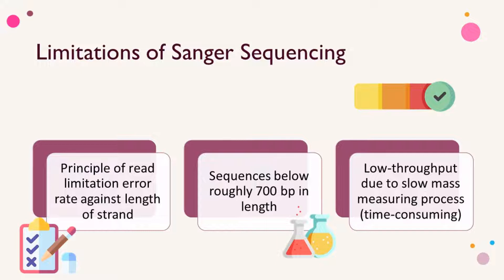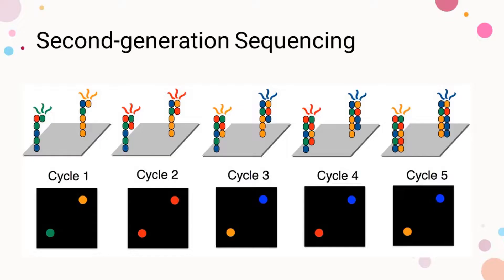On its own, Sanger sequencing is low throughput due to its slow mass-measuring process, which is also time consuming. Second generation sequencing, pioneered by Illumina, adopts a sequencing procedure that massively parallelizes the process, dramatically increasing the throughput while decreasing the price.